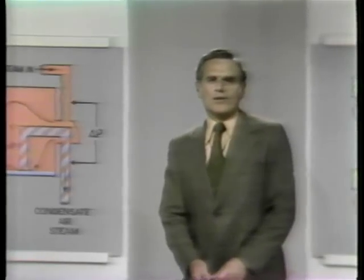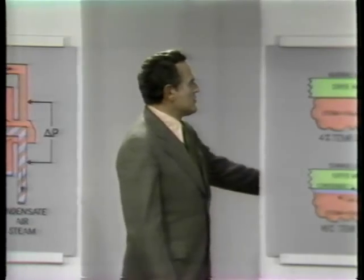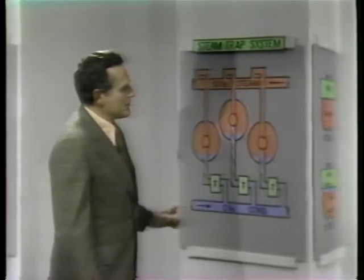Over the years there have been many devices used to help facilitate the removal of condensate and air from rotating cylinder dryers. In general, two basic methods of condensate drainage evolved: steam traps and blow-through systems. These two conventional means of removing condensate and non-condensables from revolving dryers have both advantages and disadvantages. Let's consider the steam trap system first.